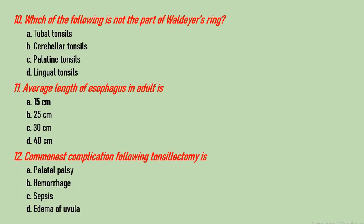Question number 10: which of the following is not part of Waldeyer's ring? Options are tubal tonsils, cerebellar tonsils, palatine tonsils, and lingual tonsils. The correct answer is B, cerebellar tonsils, as they are present in the brain and not in the throat or in Waldeyer's ring.